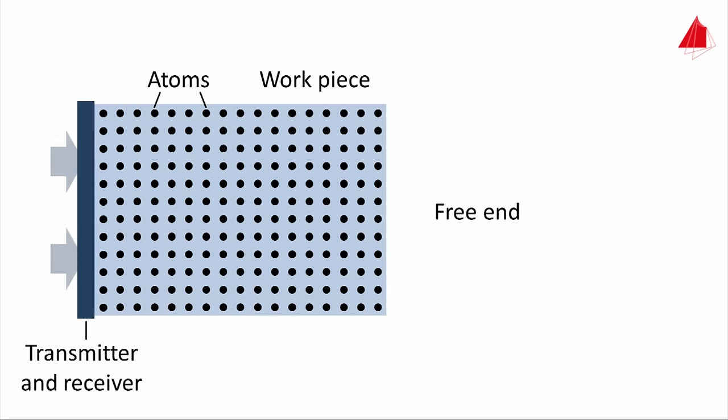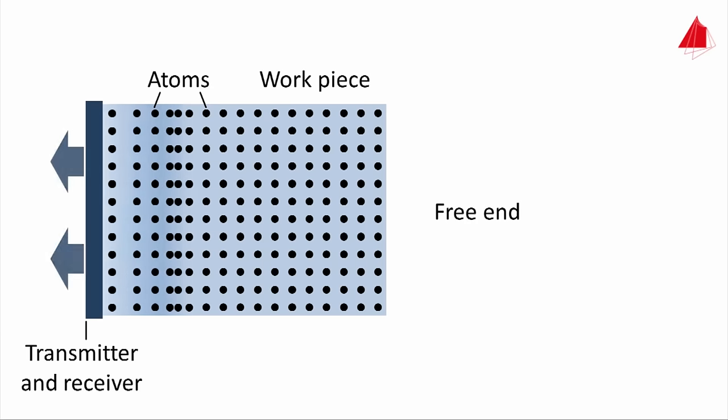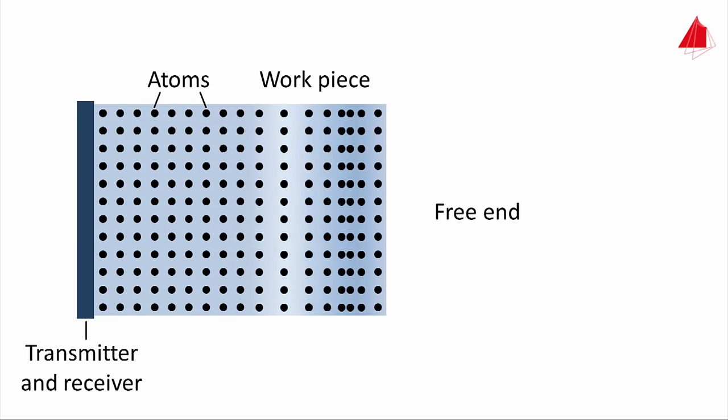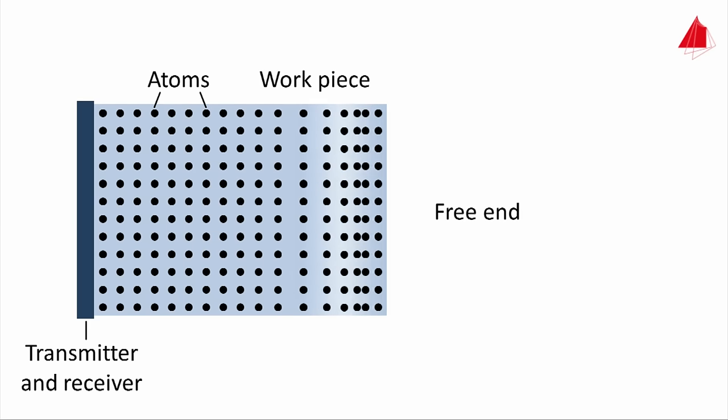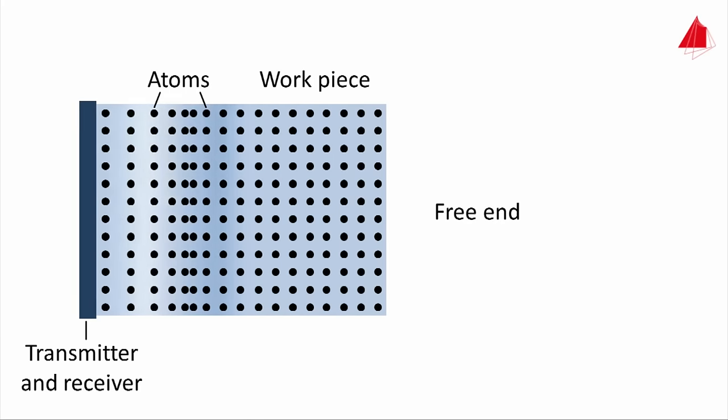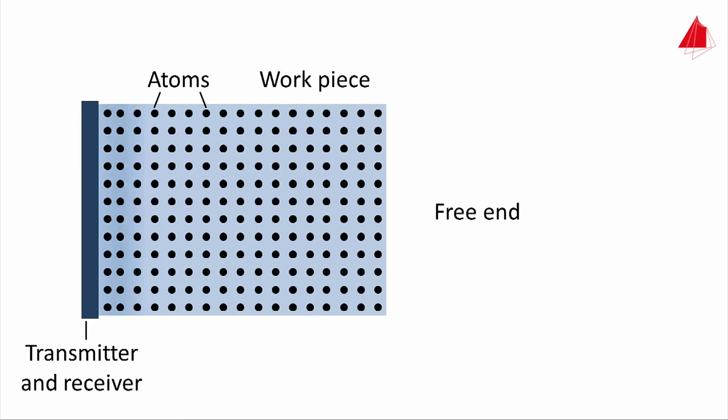A free end is also able to reflect a wave. In this case, however, the tensile side runs ahead in the reflected wave and finally deflects the receiver to the right. The reflected wave is even reflected again and actually travels several times across the length of the cylinder, but this is not shown in the animation for the sake of simplicity.